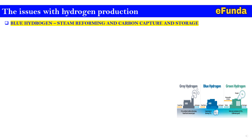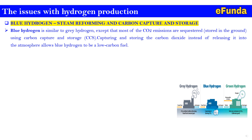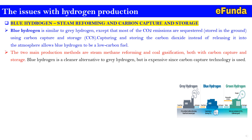Blue hydrogen — steam reforming and carbon capture and storage: blue hydrogen is similar to gray hydrogen, except that most CO2 emissions are captured and stored underground using Carbon Capture and Storage (CCS). Capturing and storing the carbon dioxide instead of releasing it into the atmosphere allows blue hydrogen to be a low-carbon fuel. The two main production methods are steam methane reforming and coal gasification, both with CCS. Blue hydrogen is a cleaner alternative to gray hydrogen but is more expensive since carbon capture technology is used.